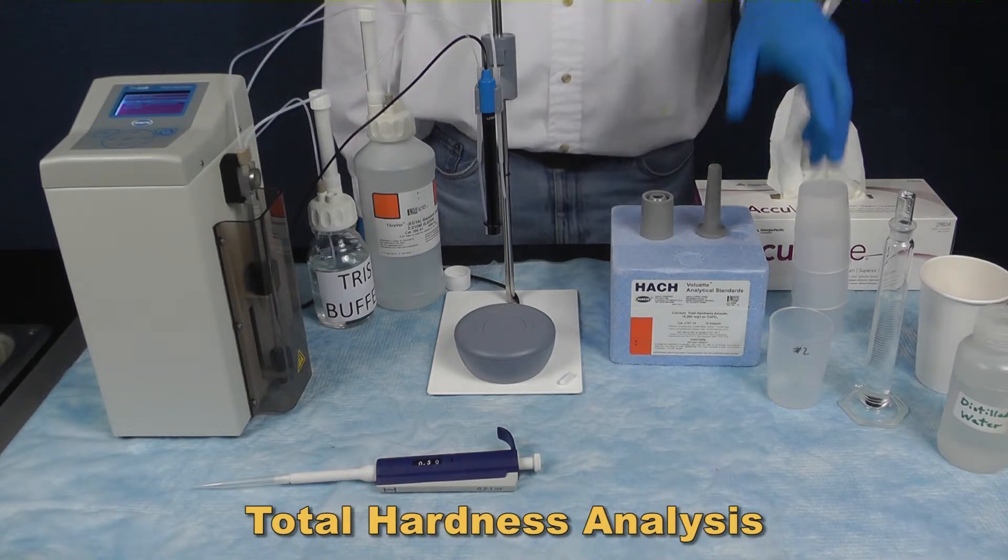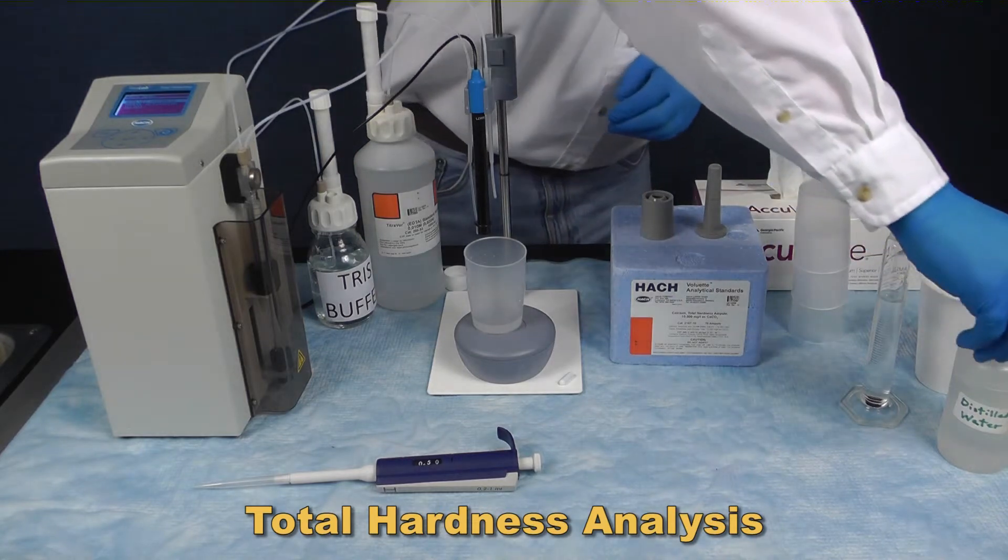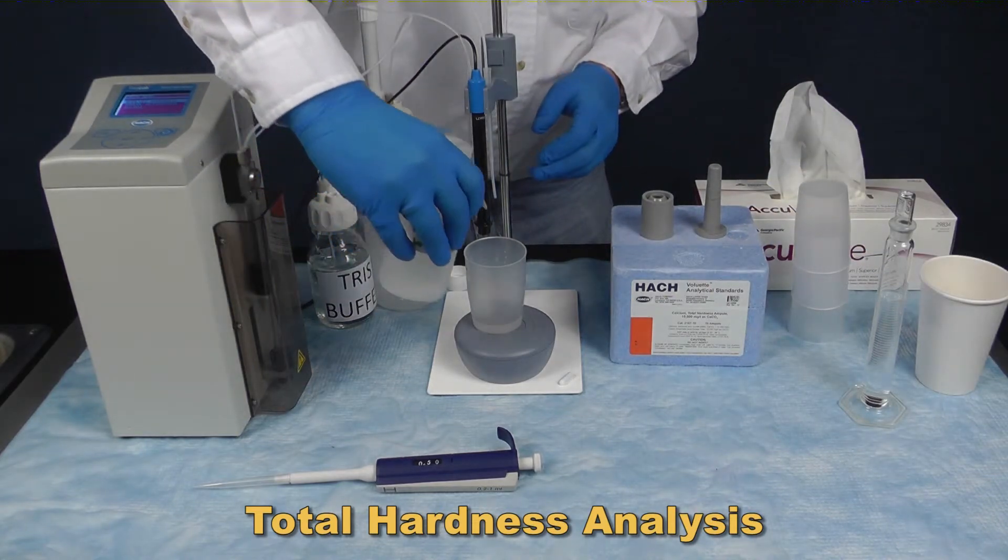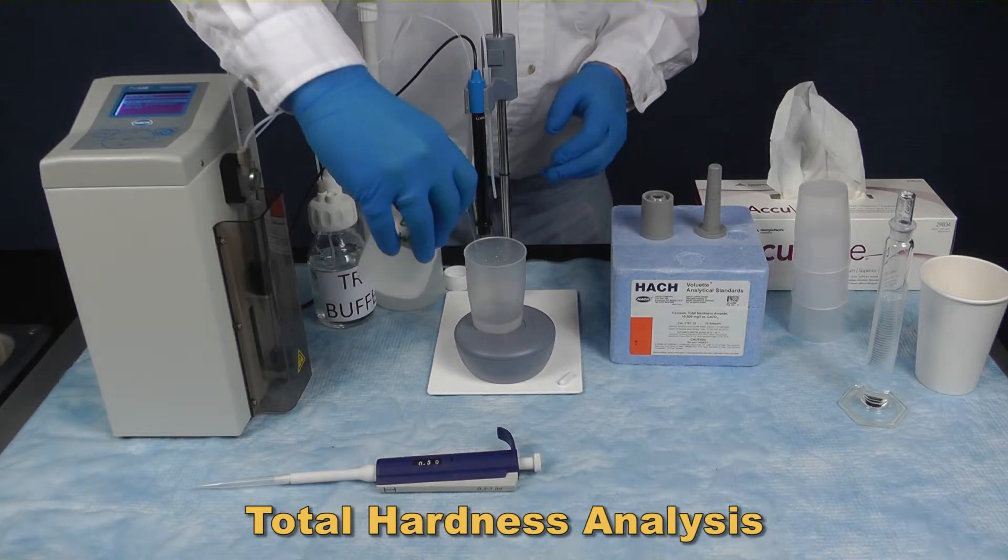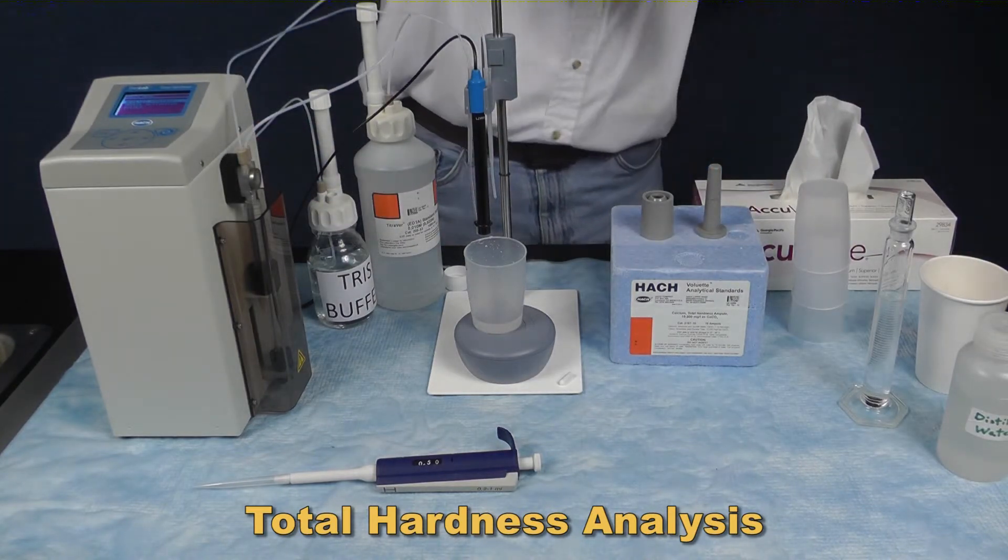We are now ready to run the analysis. Place a waste beaker under the probe on the stand and rinse well with DI water. Blot the probe dry using a chem wipe or acu-wipe.